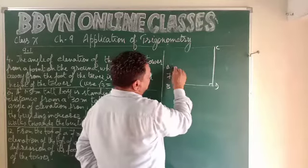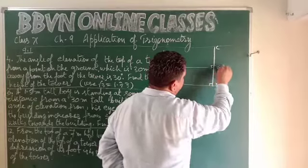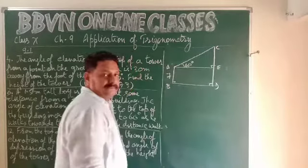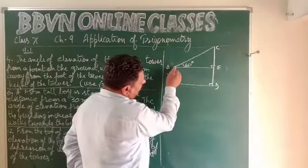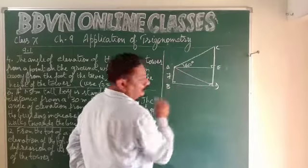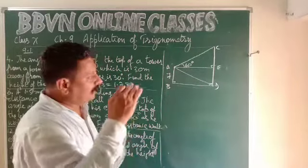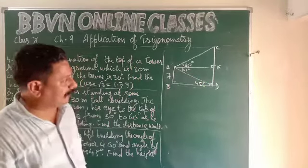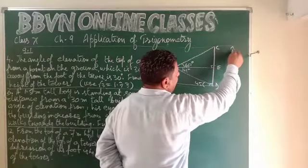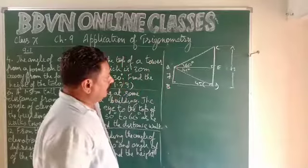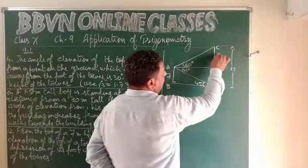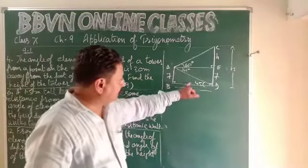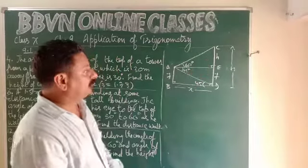AB is given as 7 meters. Draw a horizontal line from the top of the building and call that point E. From point E, the angle of elevation of the top of the tower is 60 degrees. The angle of depression of the foot of the tower is 45 degrees. Since the lines are parallel, by alternate interior angles, the angle at D is also 45 degrees. This lower portion is also 7 meters, and the upper portion is h, with horizontal distance x.